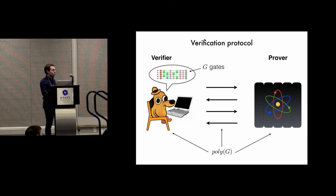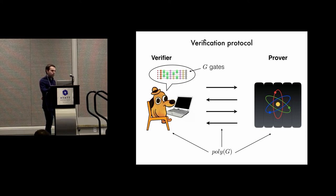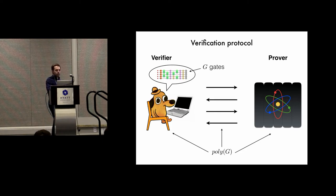The input is the quantum circuit, and the input length will be the number of gates in this circuit — let's say it has g gates, so the input length will be g. Because we want everything to be efficient, we want the runtime of the verifier, the runtime of the prover when it's behaving honestly, as well as the total amount of communication in the protocol to scale polynomially with the number of gates in the circuit — polynomially in the size of our input.